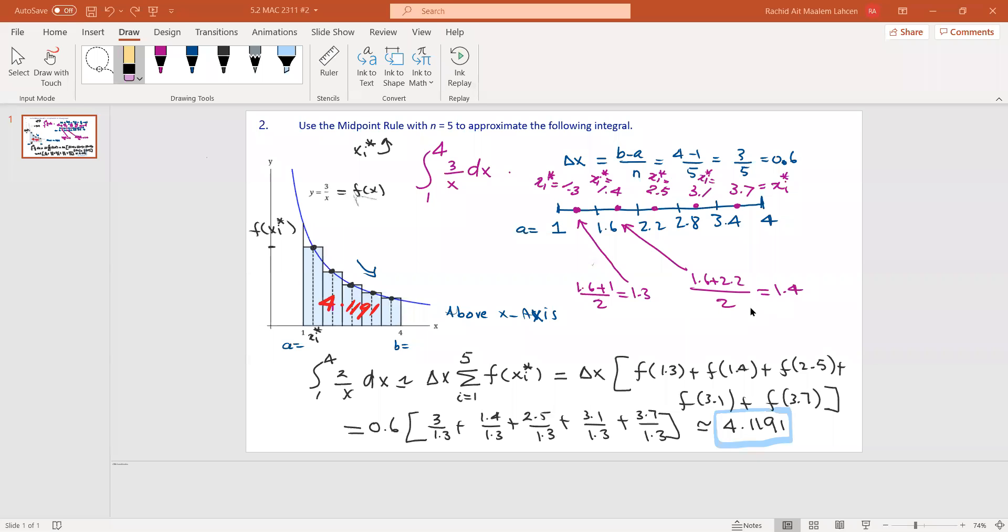Let's talk about this example because I needed to fix it and restate it. We're using the midpoint rule with n equals 5 for the partition to approximate the following integral.